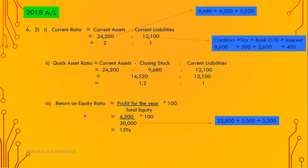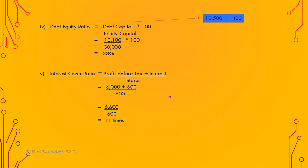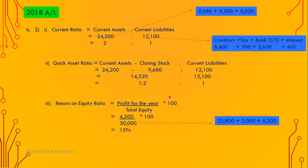Number three: return on equity ratio equals profit for the year divided by total equity, into 100. From additional information number 1, after-tax profit (profit for the year) is 4,500. Total equity is ordinary stated capital of 22,800 plus revaluation reserve of 2,000 plus retained earnings of 5,200 — equaling 30,000. Into 100, that's 15%.